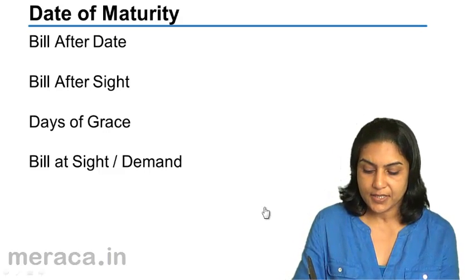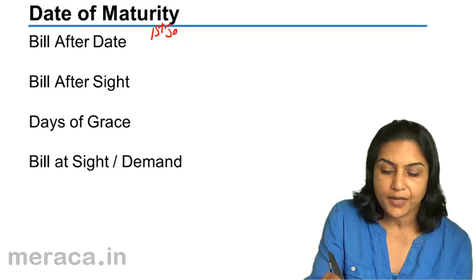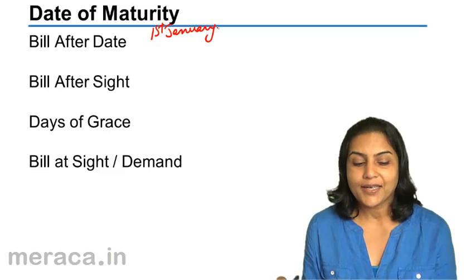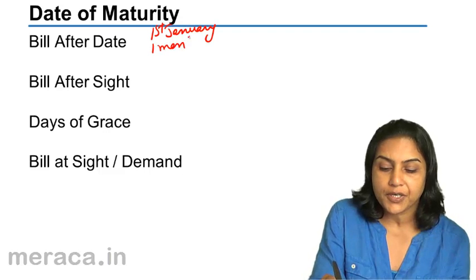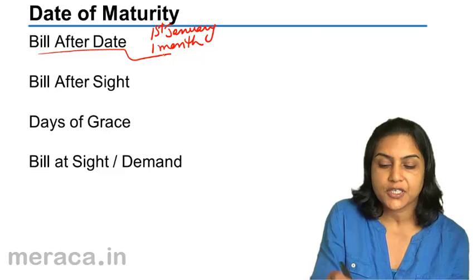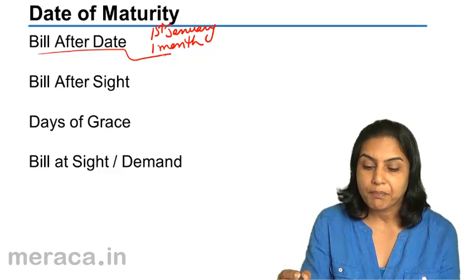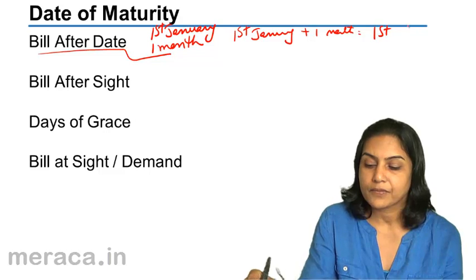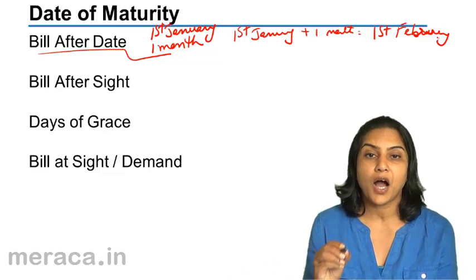Bill after date. Let us take an example. Let us say the bill is dated 1st January — that means the bill was drawn on 1st January — and its maturity is one month after date. So 1st January plus one month is 1st February. So 1st February would be the date of expiry. That is bill after date.